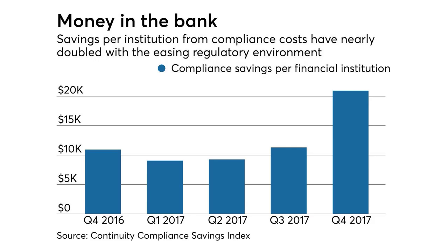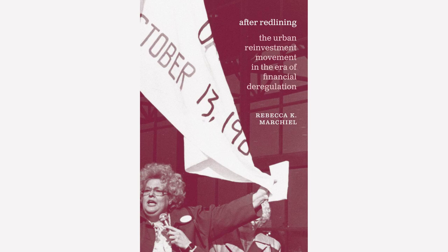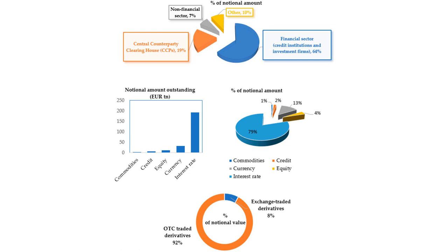Financial Deregulation: Another factor that contributed to the Great Recession was financial deregulation. In the 1990s, the U.S. government deregulated the financial industry, which allowed banks and other financial institutions to take on more risk. This led to the creation of complex financial instruments such as mortgage-backed securities and collateralized debt obligations.